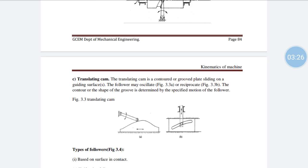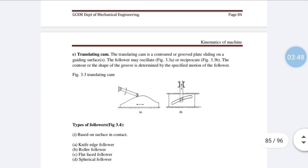Another type is the translating cam. In this cam, a contour curve or shape is cut on the inside of a thin plate, and the follower traces that contour. The translating cam is a contour or groove plate sliding on a guiding surface; the follower may oscillate, and the shape of the groove is determined by the specific motion required.